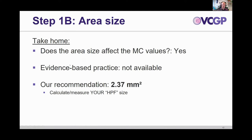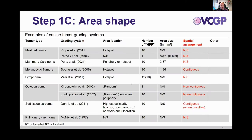The take-home for area size is that the size of your high power field does certainly have an impact on the mitotic count. We currently don't know which area size is ideal, so we recommend as a standard to use 2.37 square millimeters because it is the standard area size of light microscopes. Next, the area shape: many studies do not report in which shape the high power fields should be arranged. Some say they need to be contiguous; others say they don't need to be.